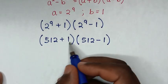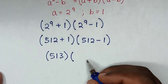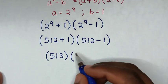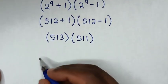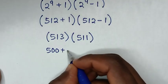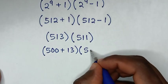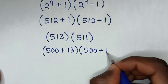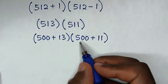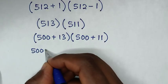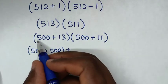Then 512 plus 1 is 513 and 512 minus 1 is 511, giving us 513 times 511. We can write 513 as 500 plus 13, and 511 as 500 plus 11, so in the next step we expand 500 plus 13 times 500 plus 11.